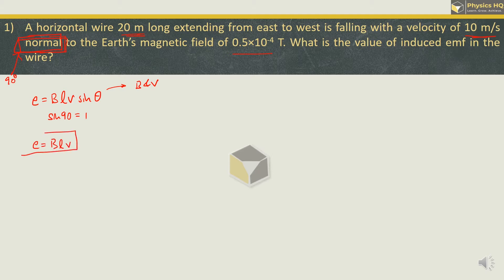Remember this formula, it is equal to 1-2 sums in this chapter which we will solve. So B is 0.5 x 10^-4, length given is 20 meter, velocity is 10.